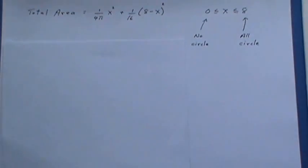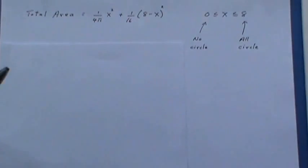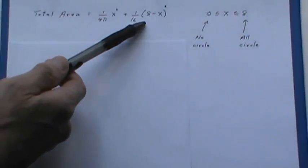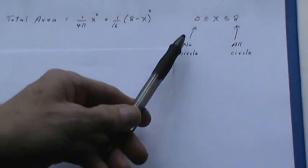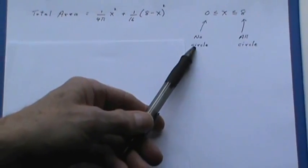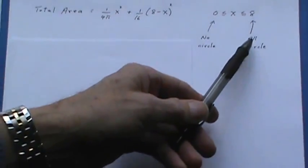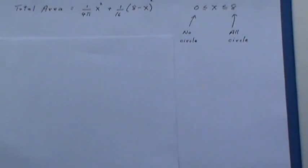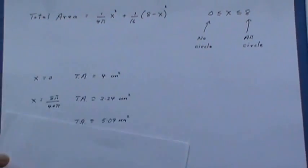Now let's go back. This was my expression for total area and you see I have a domain for X. If X is 0 there's no circle. I haven't allowed anything for the circle and if it's 8 it's entirely circle. Nothing left for the square.